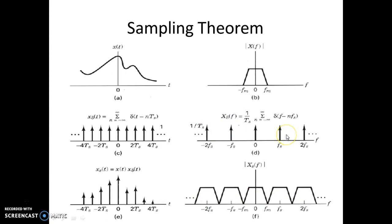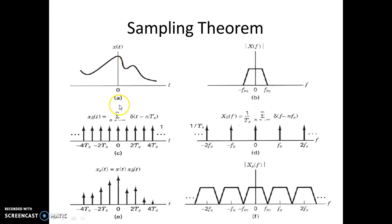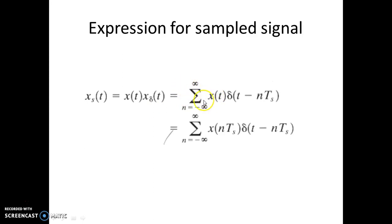The convolution of X(f) with the train of impulses gives you the sampled signal spectrum. You will also notice that when fs equals 2fm, the sampled signal expression is x_s(t) = x(t) · x_delta(t), given by the sum from n = −∞ to ∞ of x(nTs) · δ(t − nTs). This again uses the sifting property of the impulse, which we already covered in the last class.